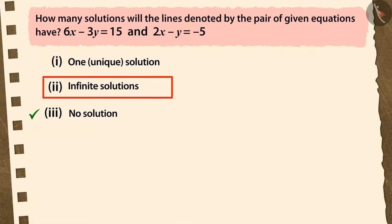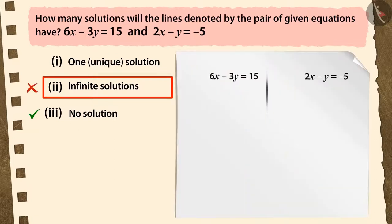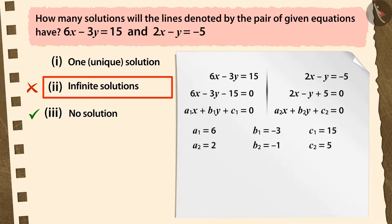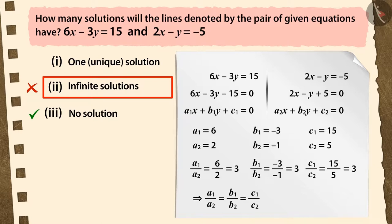If you chose option 2, then it's also a good try, but it is also incorrect. Because while comparing our equations with the general form of linear equations in two variables, we forgot to prefix the constant term of the first equation with a negative sign.